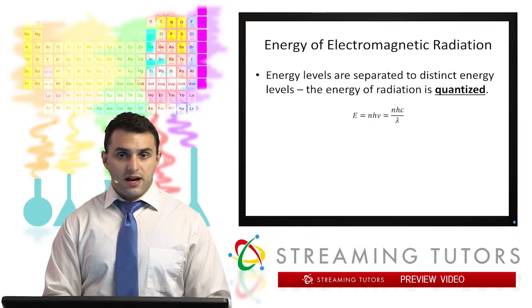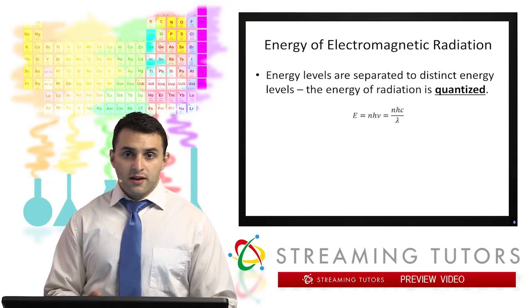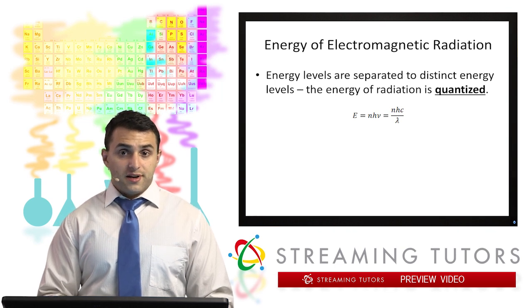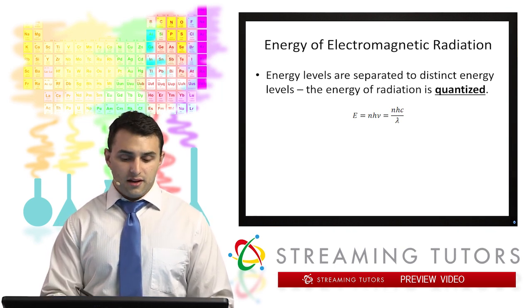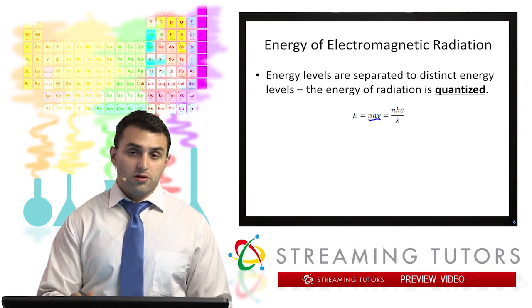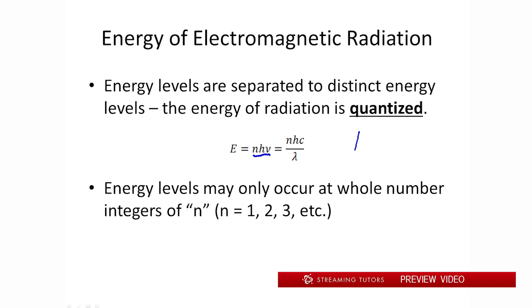So on a related note to that, we noticed that there was a wide range of wavelengths going on in that graphic. And we can use the wavelength and frequency to quantify the energy of those waves. So the energy is just going to equal nhν or if we converted that, it would be nhc over lambda. Now h is just Planck's constant. It's just a constant that you can look up. N is just a whole number integer. So that means n equals 1, n equals 2, n equals 3.